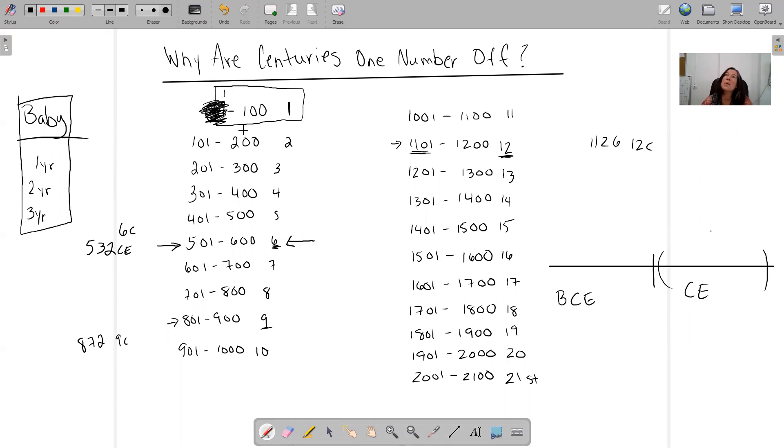You know what, no teacher that you ever have in your entire life is ever going to care if you just have to draw this little graph out on your paper. You're not going to have to do the whole thing. If you ever just need to pick up some paper and scribble down one through 100, 101 through 200, 201 through 300, and go one, two, three, just to remind yourself, there's no problem with that.